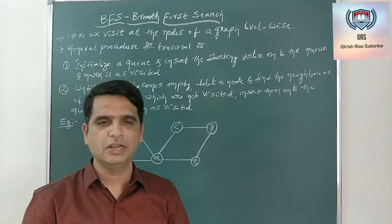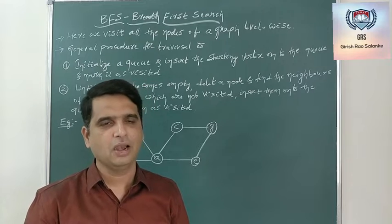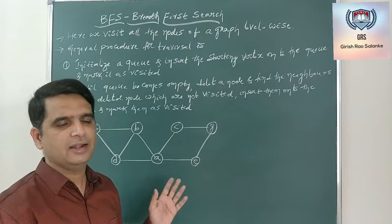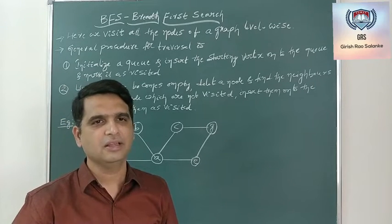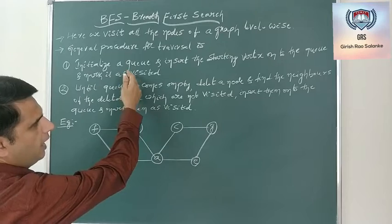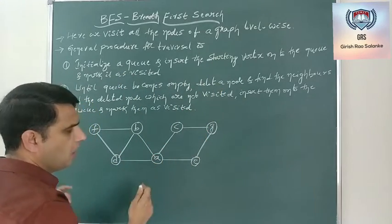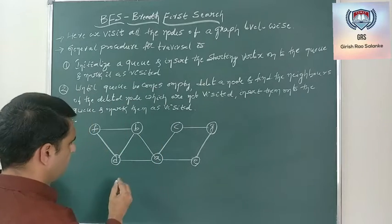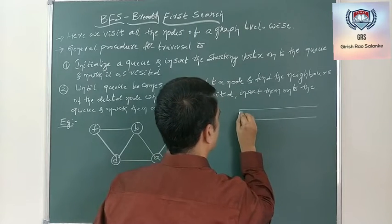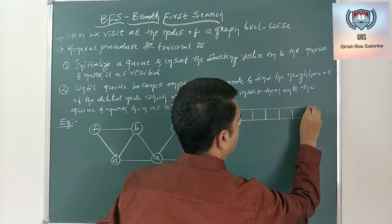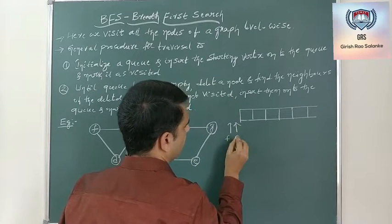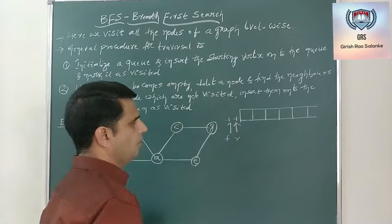Let's take a small example to understand how exactly the BFS algorithm works. I'll consider a graph with 7 vertices and start the BFS traversal with A as the starting vertex. First, I need to initialize a queue and put the starting vertex A onto it. Initially, before inserting any element, both the front and rear of the queue are initialized to minus 1.